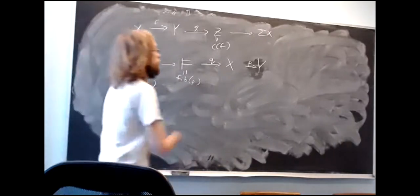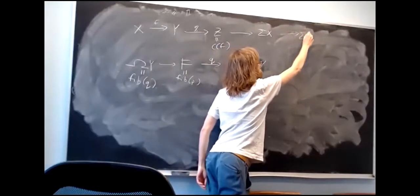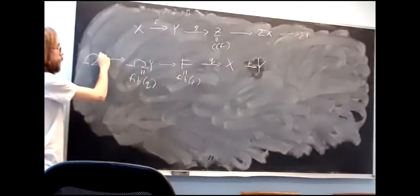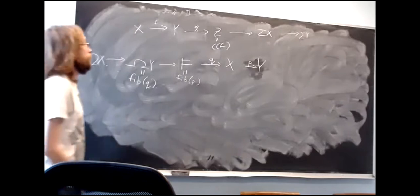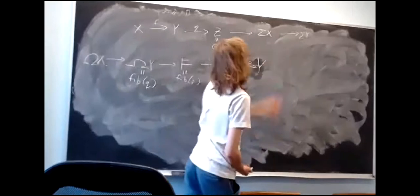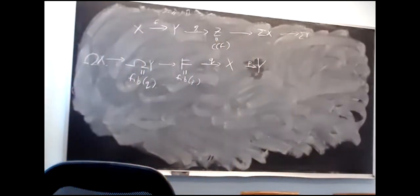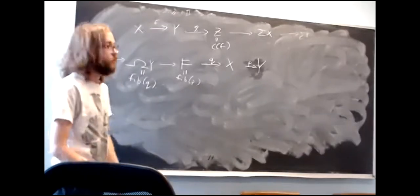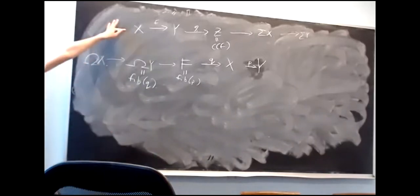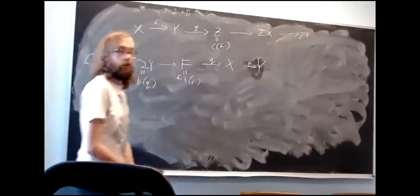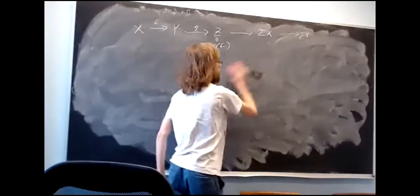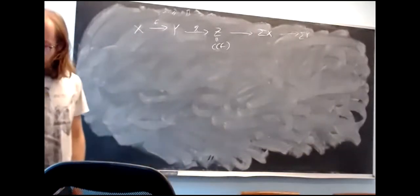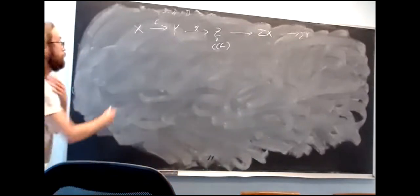Obviously we can continue this process — taking the cofiber of this would give a map to the suspension of y, and taking the fiber of this would give a map from the loop space of x. It's worth being more precise: the next map should be identified with the suspension of f, and this is one of the places where people introduce a sign. Let me try to be more explicit about what happens when we extend this cofiber sequence. I'll say this in spaces, but as I mentioned, when talking about cones and cylinders, you can make sense of these in an arbitrary model category.